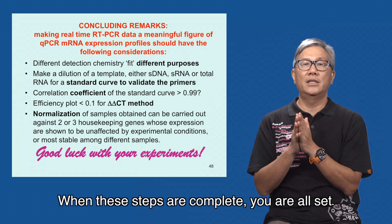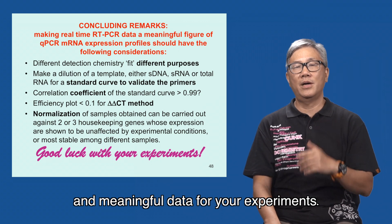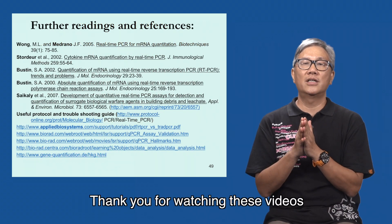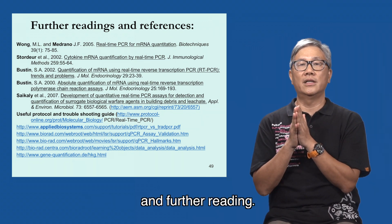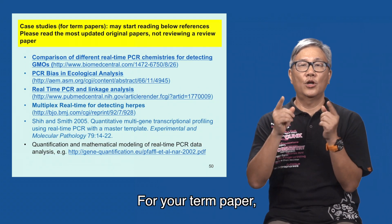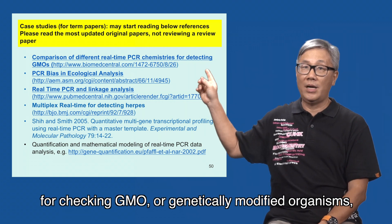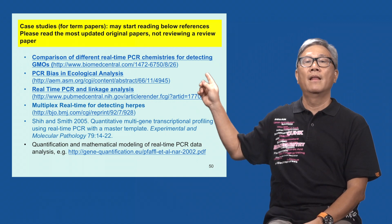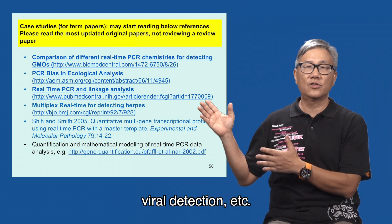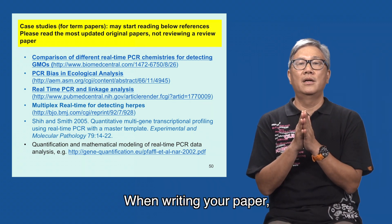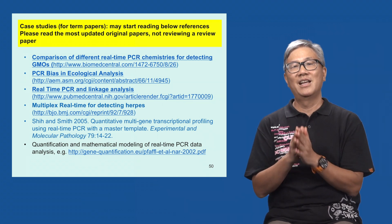When these steps are complete, you are all set — you will be able to obtain useful and meaningful data for your experiments. Thank you for watching these videos on real-time quantitative PCR. Here are the papers for your reference and further reading. For your term paper, please select one topic from the following papers, covering areas such as checking GMOs or genetically modified organisms, ecological analysis, genetic linkage analysis, viral detection, etc. When writing your paper, please cite original research papers and do not just read the review papers.